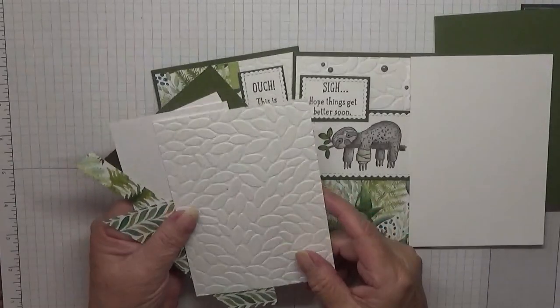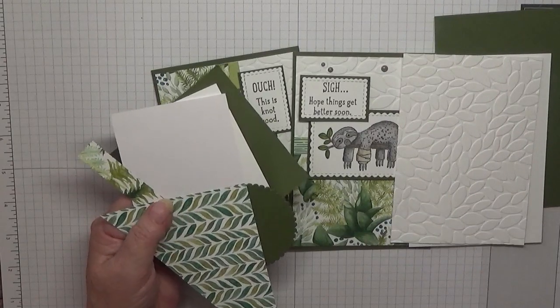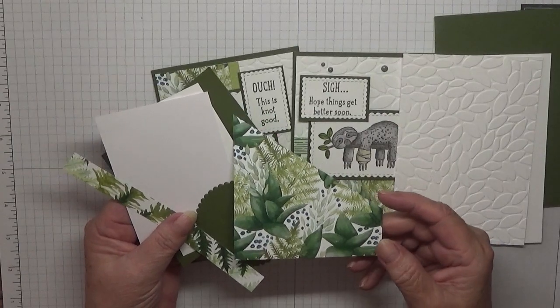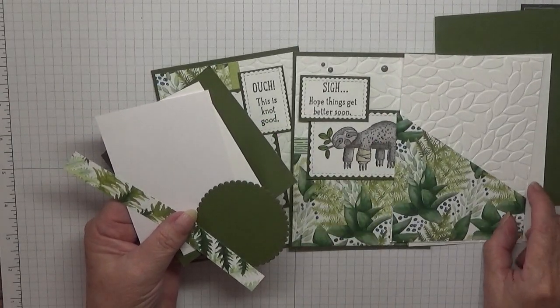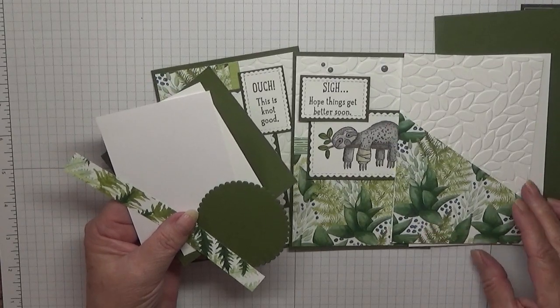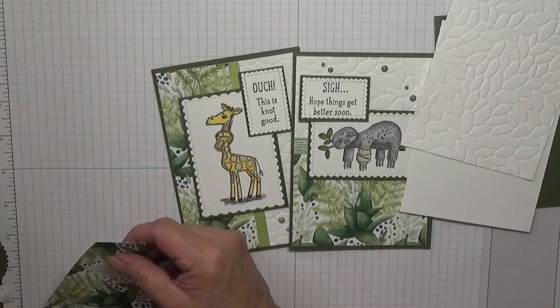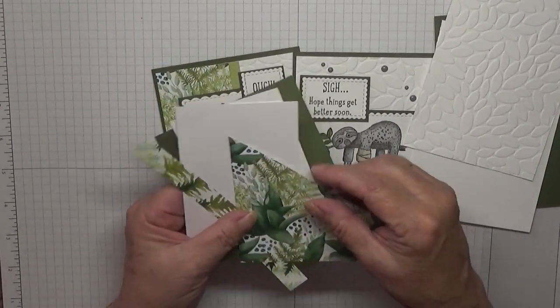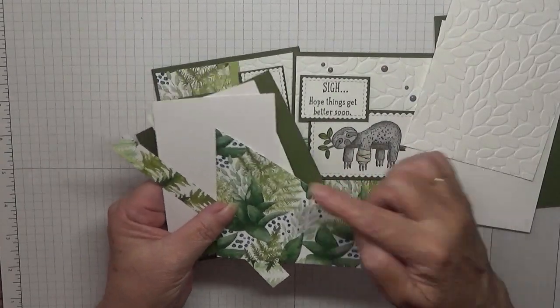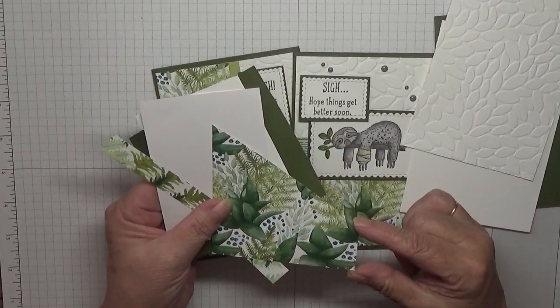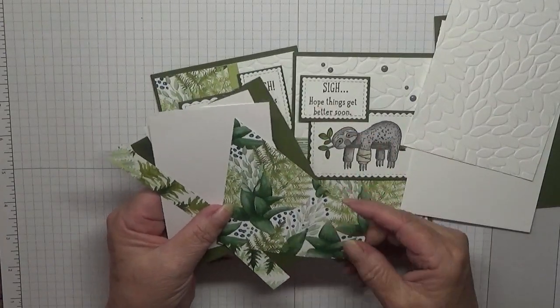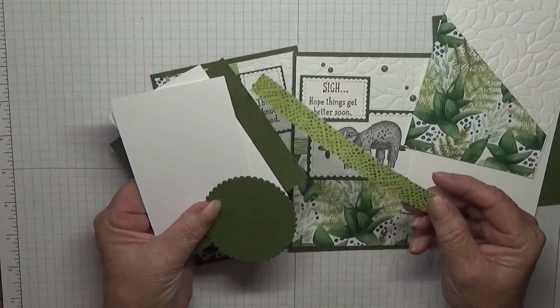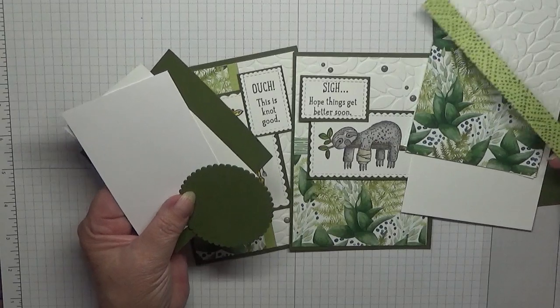I have a piece of the Forever Fern DSP. I've cut a piece that's three and seven eighths across and it was four inches deep. I cut it down to one and three eighths. I just didn't measure it, I just chopped it. Then I've got another strip of the DSP in a different design which I'm going to place on top.